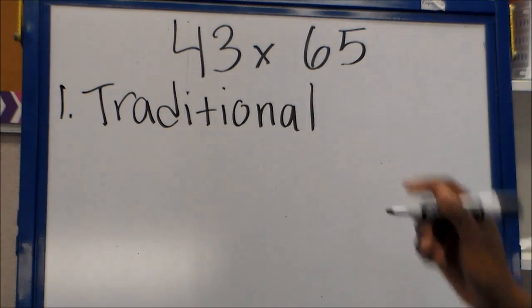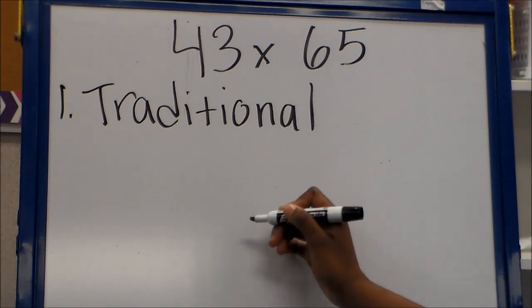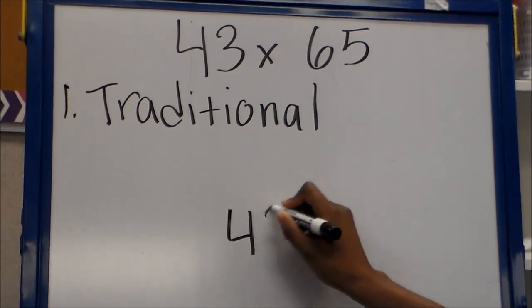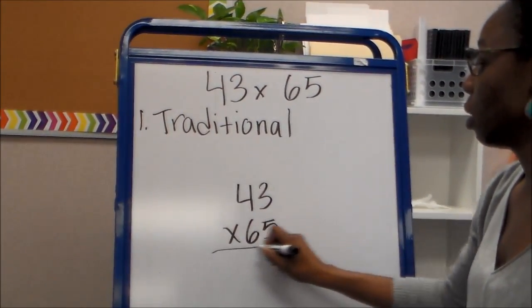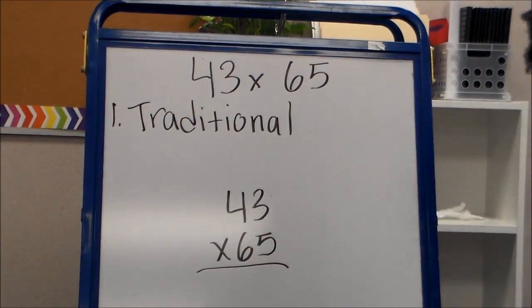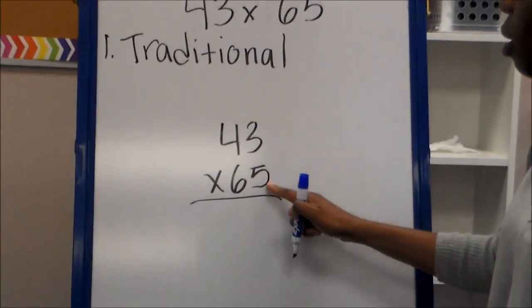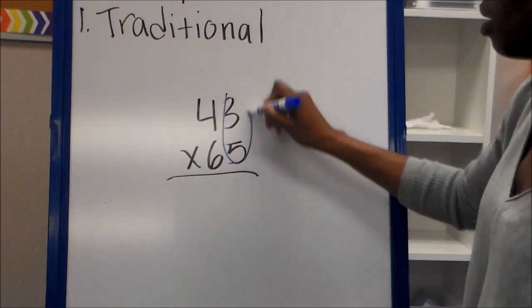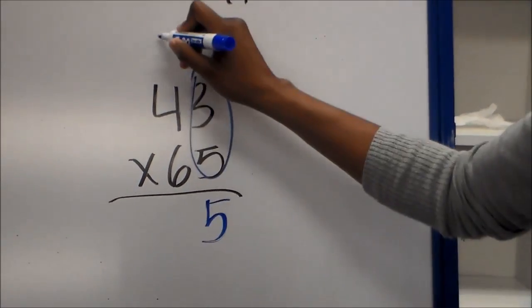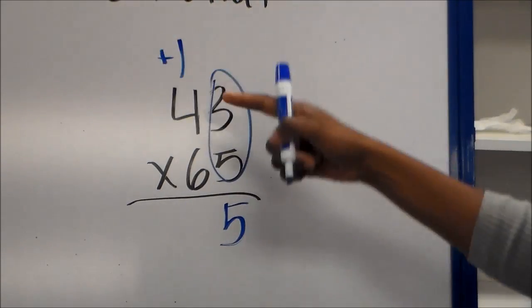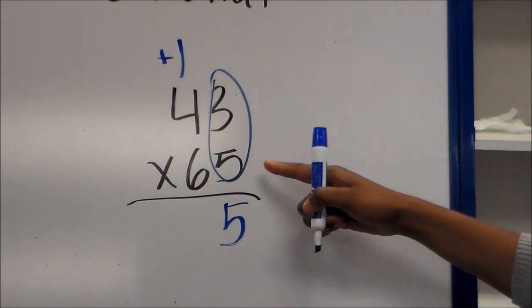And this is the way that we were taught when we were kids. So we have 43 times 65. We start with the number in the ones place on the bottom. We multiply 3 times 5, which gives us 15. And the number on top, we add after we're finished multiplying.